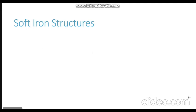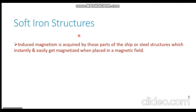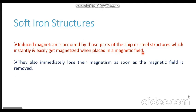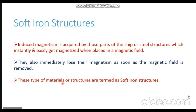Based on what type of magnetism is acquired by a particular structure, the ship's structures are divided into two categories. The first category is soft iron structures and the second is hard iron structures. Induced magnetism of the ship is acquired by those parts which instantly and easily get magnetized when placed in a magnetic field, and they immediately lose their magnetism as soon as the magnetic field is removed. These type of materials or structures are termed soft iron structures.